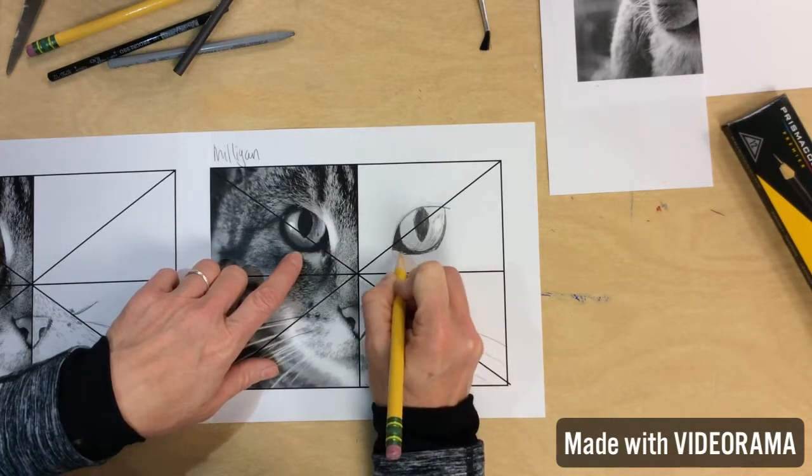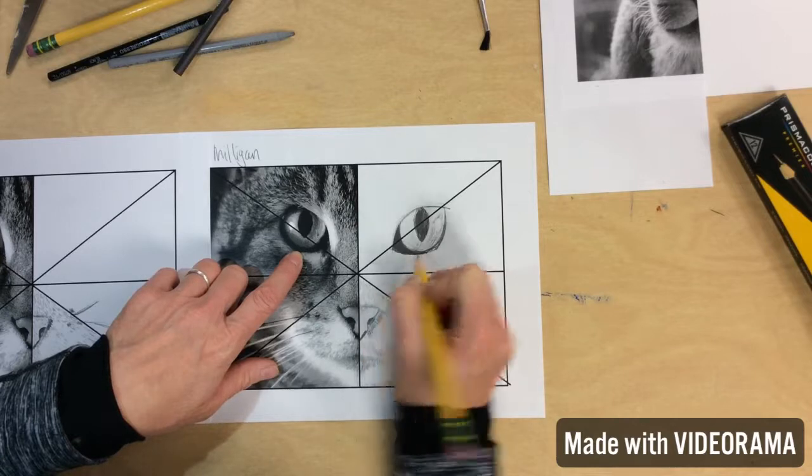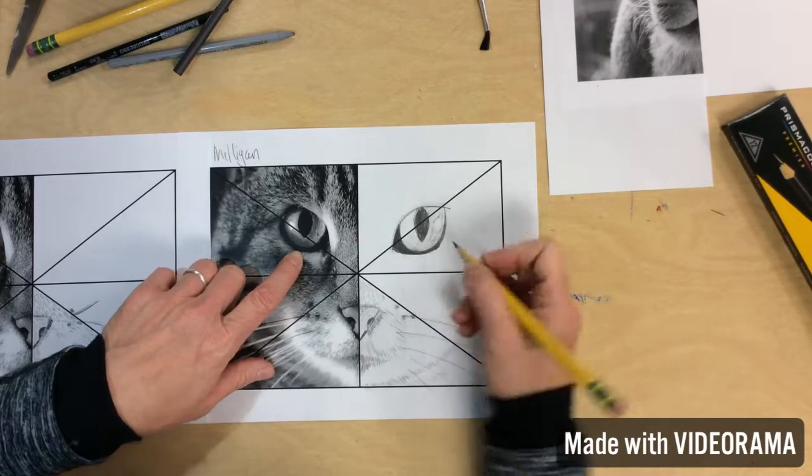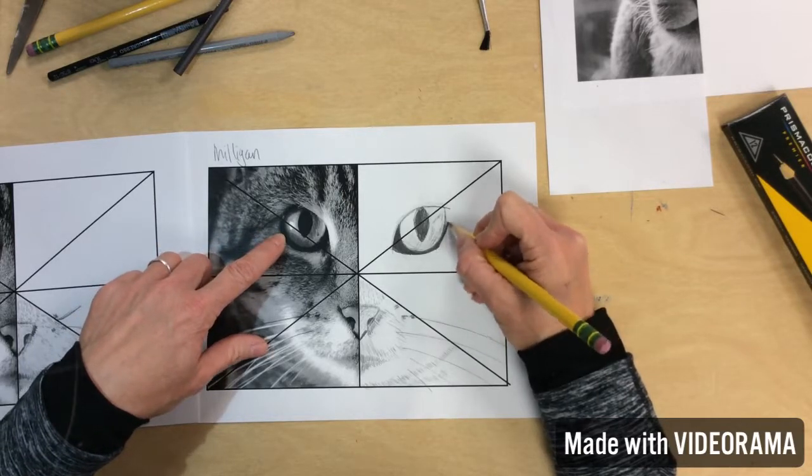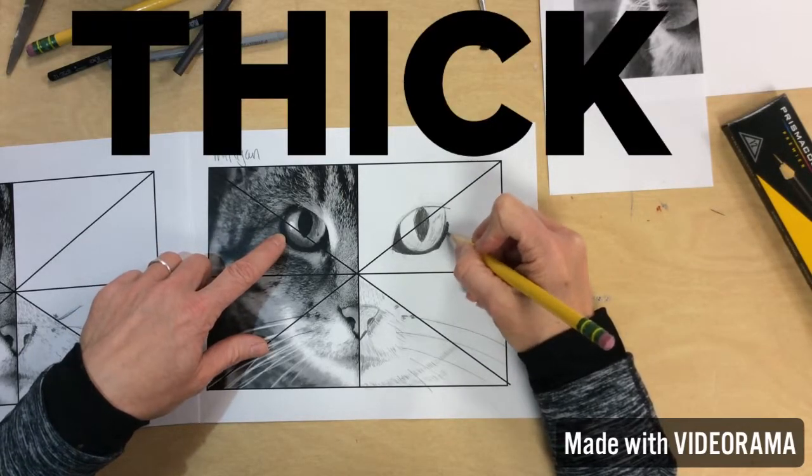Then you will create the contrast and really come in and make it look more like an eye. See how thick? I need to make this thicker. Coming into this side. Thicker.